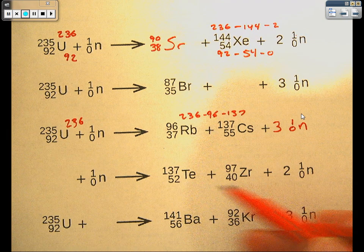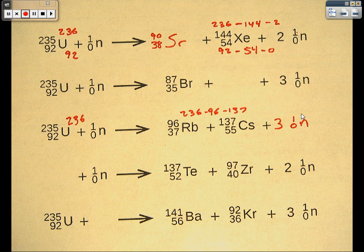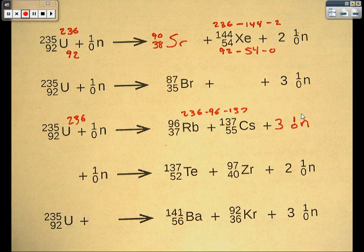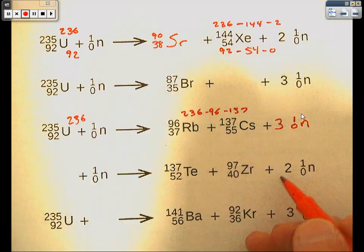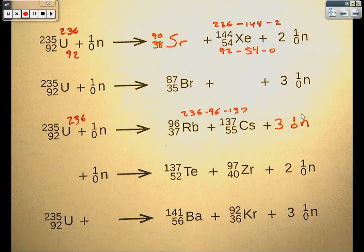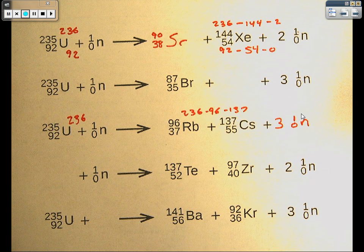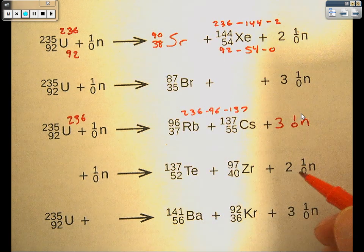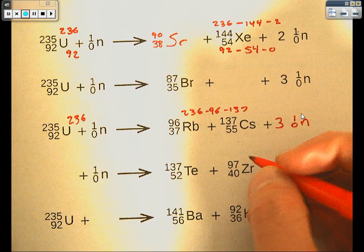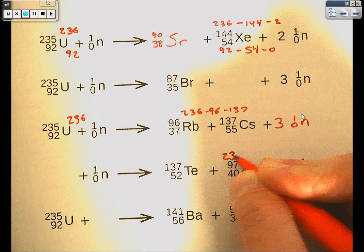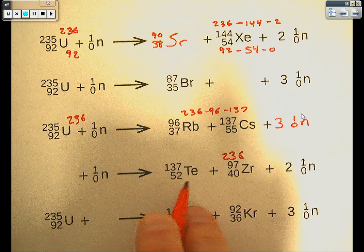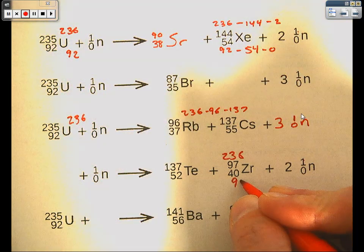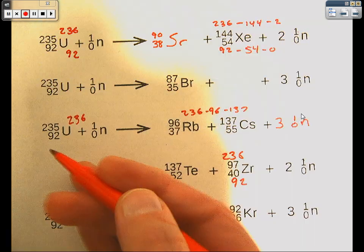Even if we're working back over towards the starting side, same principle. We're going to add together everything we have on our complete side. This time we're going to add together everything we have over here on the right. So we have 137 plus 97 plus 2. Again, 2 times 1. This is 236. 52 plus 40 plus 0 is 92.